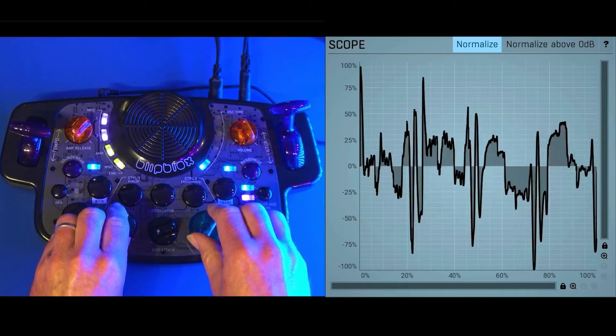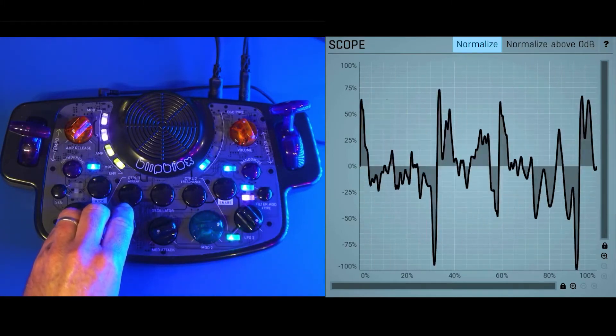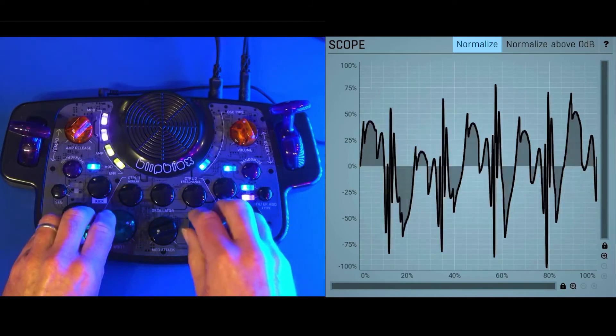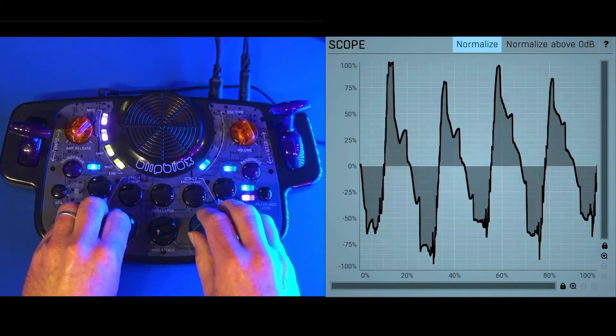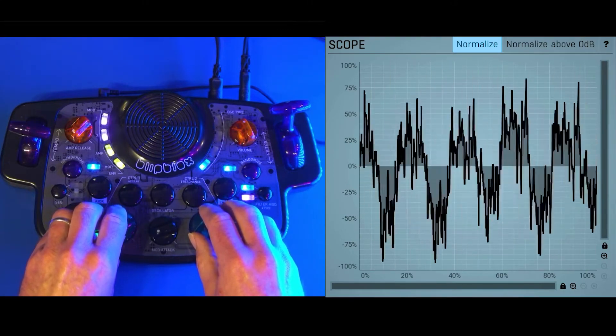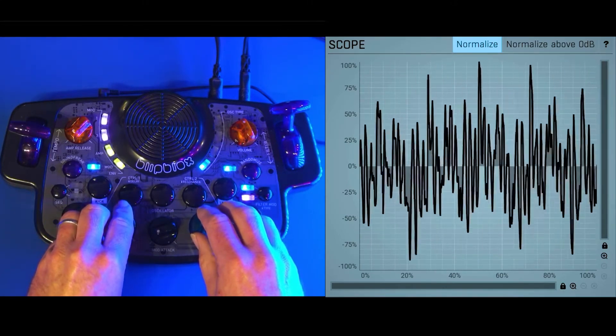Sometimes it's hard for the scope to pick up some of these signals, just because the scope has to find a good repeating waveform to lock onto. There's too much variation in the waveform and sometimes it has a difficult time doing that.